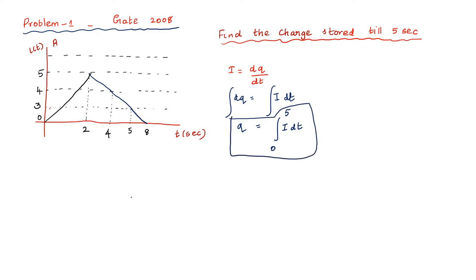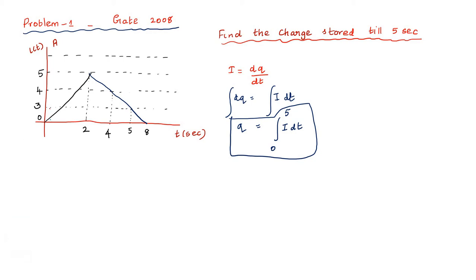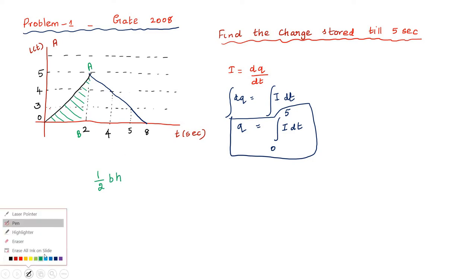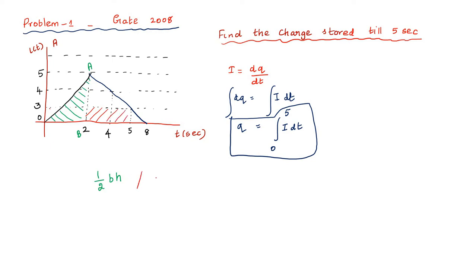To find the average value, we need to find the area under this curve. First, I am going to consider the triangle region. The area of a right-angle triangle is half × base × height. Next, I am going to consider the rectangle region. The area of a rectangle is length × breadth. Then again, there is another triangle with the same formula used to find the area.